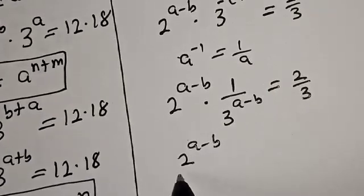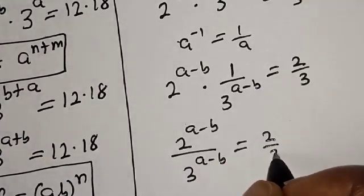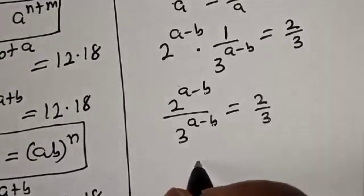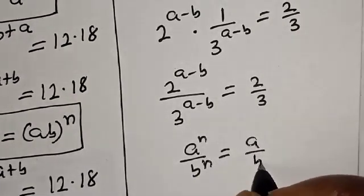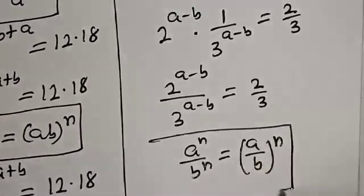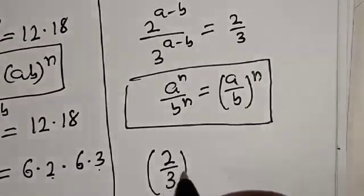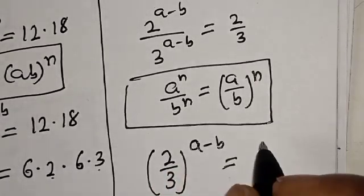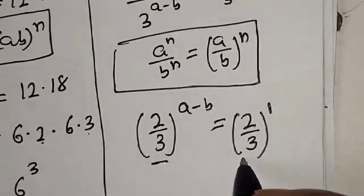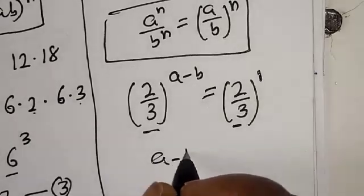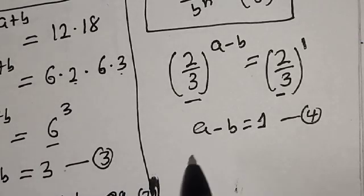So that is 2 raised to power A minus B divided by 3 raised to power A minus B equals 2 over 3. Take note of this rule: A raised to power N over B raised to power N equals A over B raised to power N. This becomes 2 over 3 to the power of A minus B equals 2 over 3, which is also 2 over 3 raised to the power of 1. We have the same base, therefore A minus B equals 1. Let's call this equation 4.